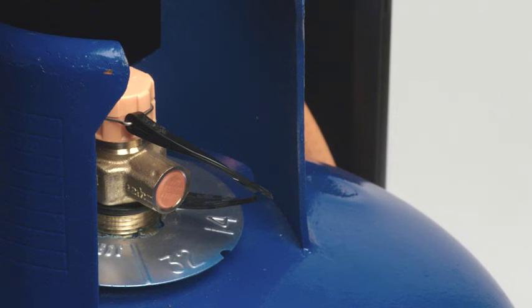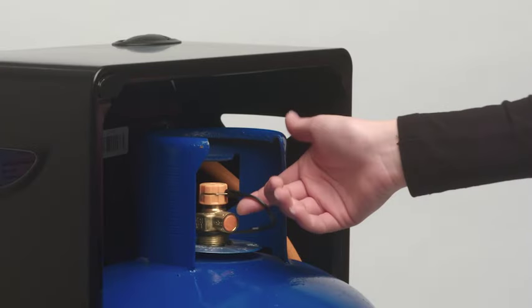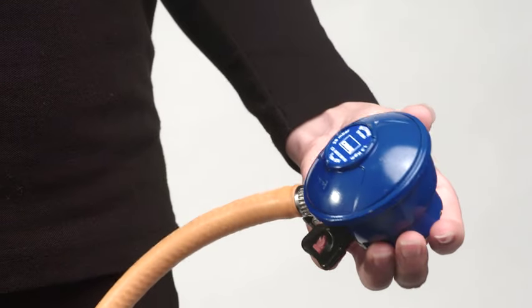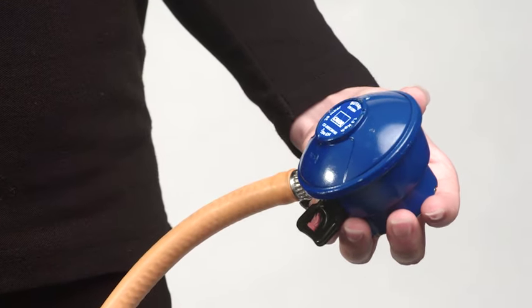To remove the protective cap from the gas bottle, simply pull the lanyard towards you slightly and lift it up. Next, you should check your regulator, ensuring that it's clean and free from damage.